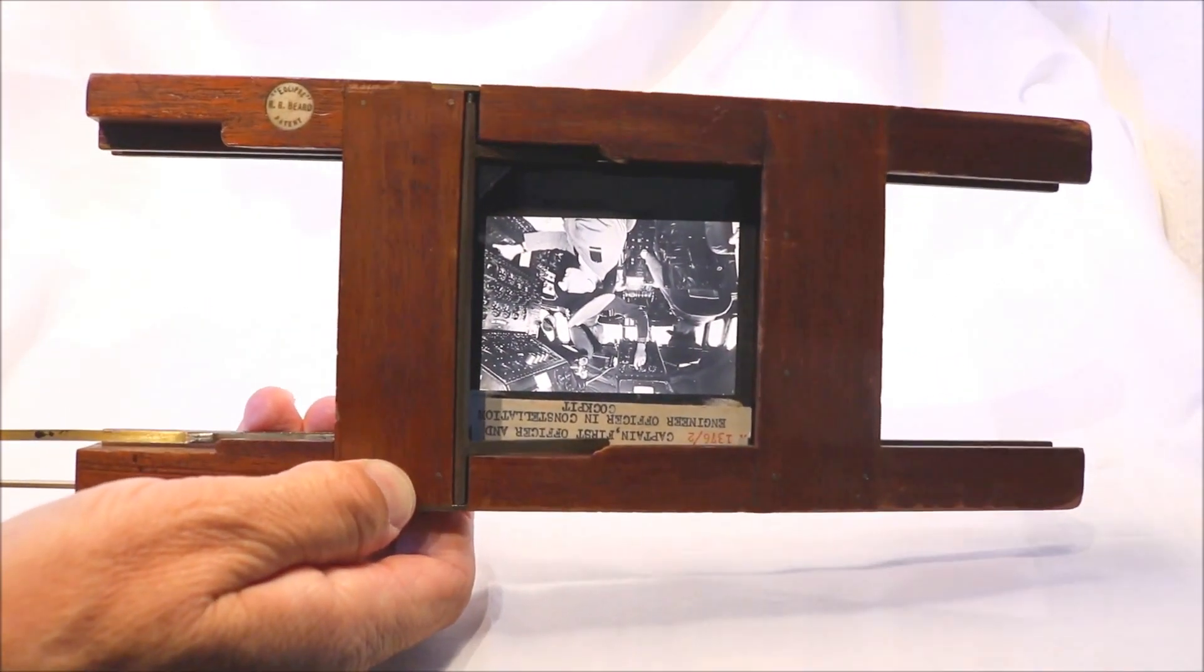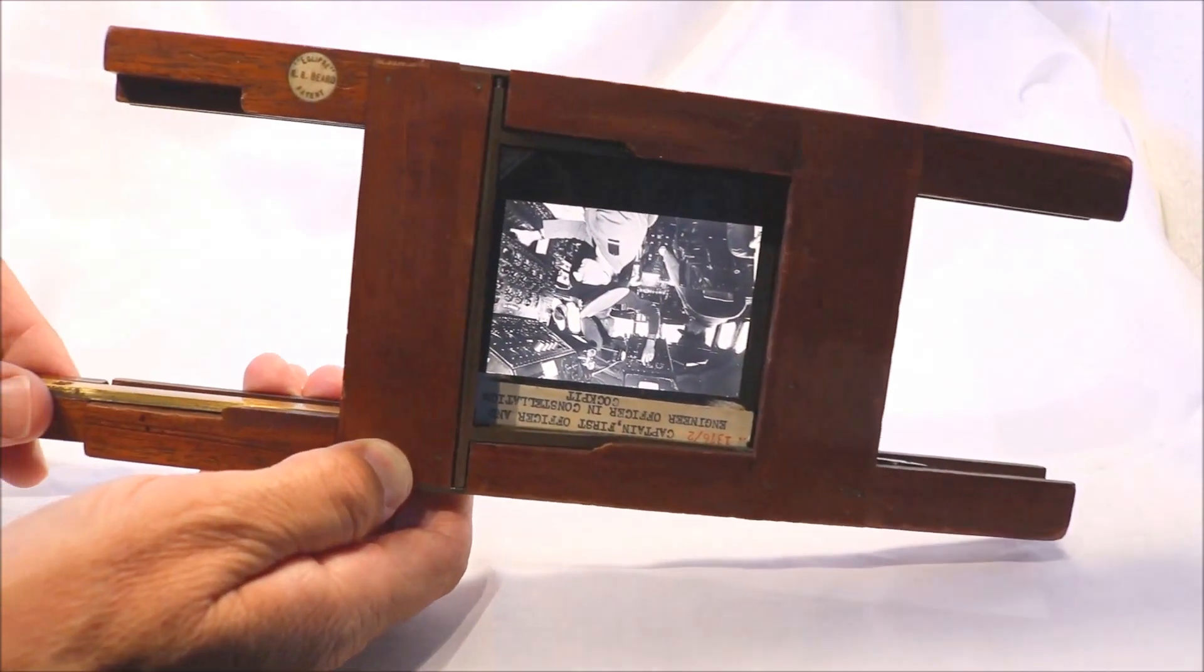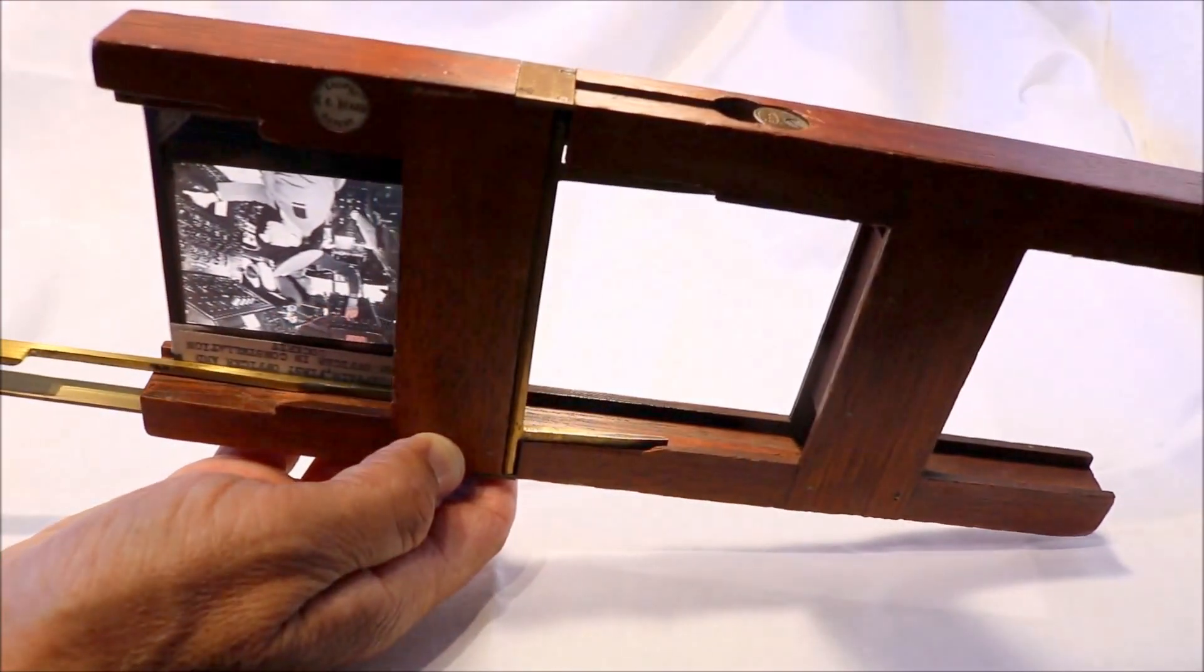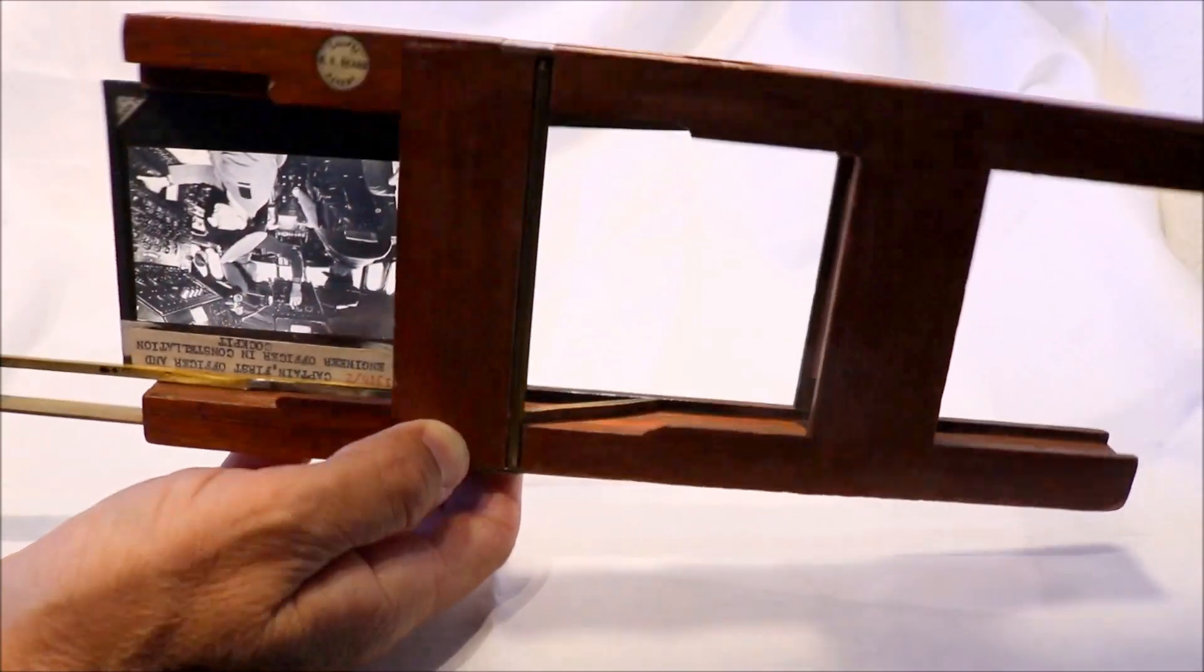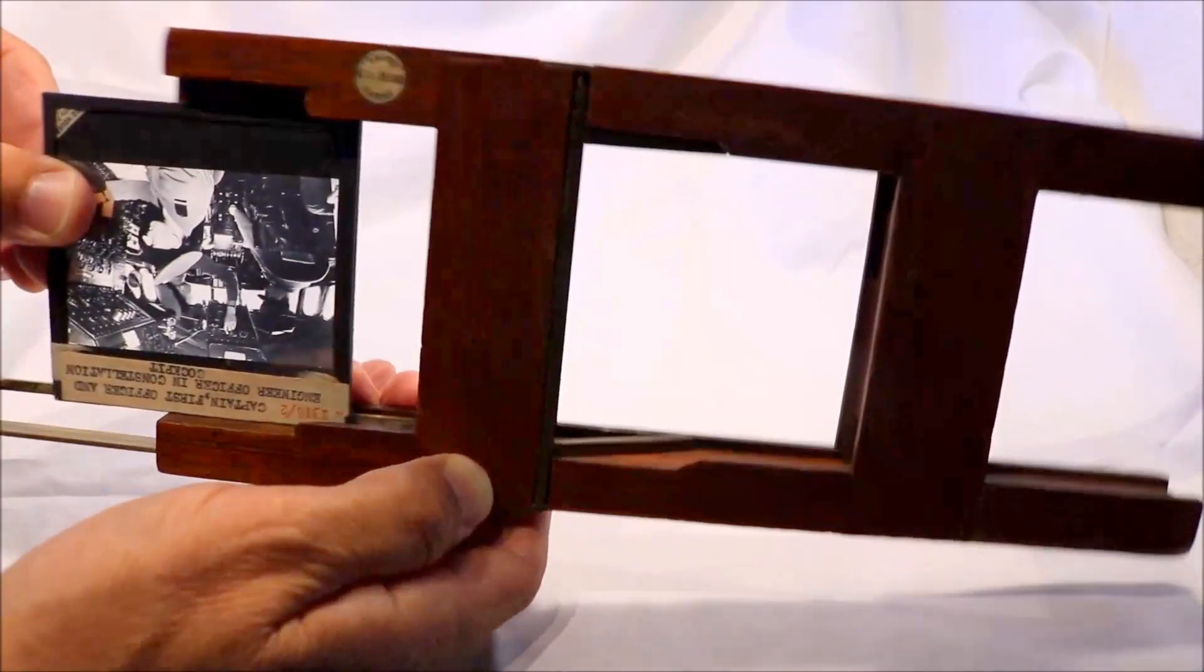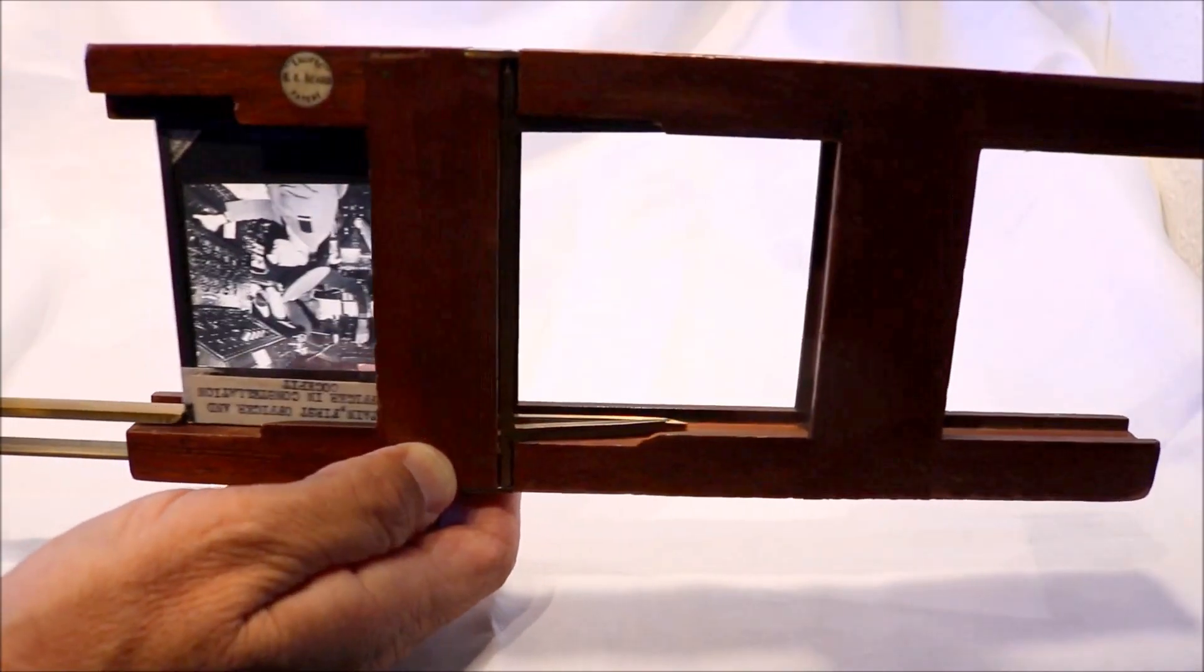But as you pull the handle out it pushes the slide forward so that it's focused on screen. Obviously you need to set your magic lantern so that the focus is the same for every slide. And to get the slide out you push the handle in, pull it out and it pulls the slide out.